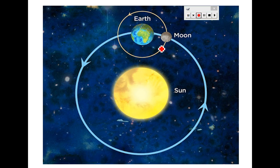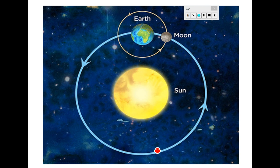Let's look at this picture and discover the movement of Earth in detail. We have three objects — the Sun, Earth, and the Moon. Earth is moving around the Sun and it takes 365 days, which makes about one year. The Moon is moving around Earth in a circle, and it takes about one month.